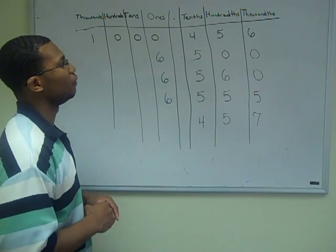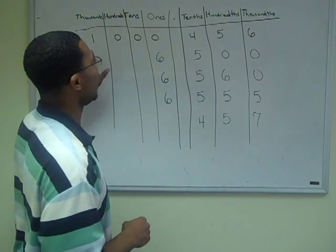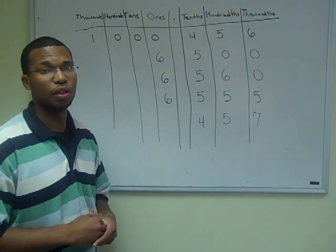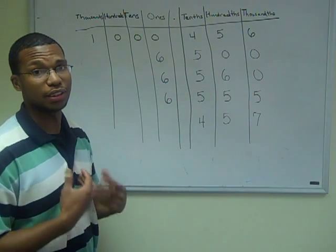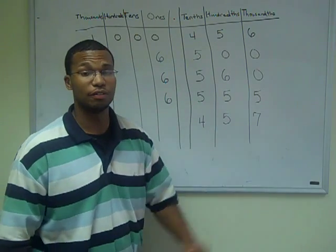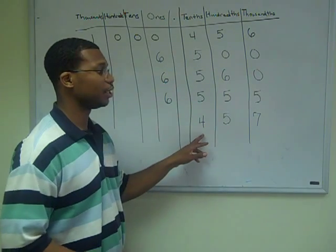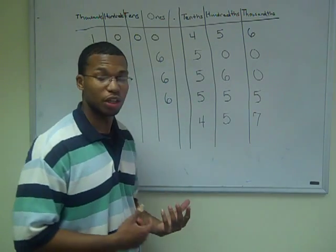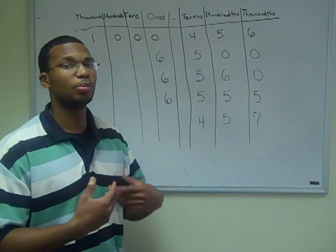Now 1,456 thousandths — we know that this is the most because we have a 1 in the ones place. As we know, as the digits increase going to the left, the numbers become larger. So this is a clear indicator that this is the largest number. The smallest number would be 457 thousandths. The reason we know this is the smallest is because its leading digit, the 4, is the least out of the rest of the numbers, and as the digits decrease going to the right, we get smaller numbers.